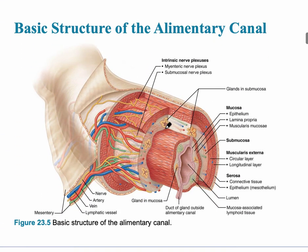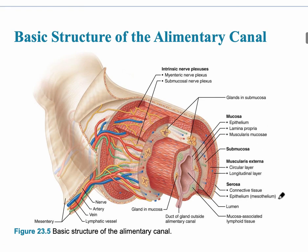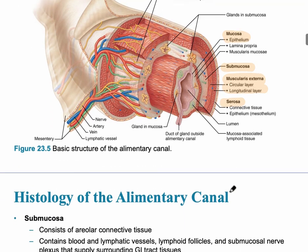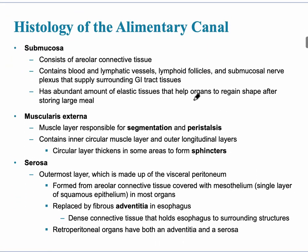A diagram shows the layers: the deepest is the mucosa with its epithelium, then the submucosa — which contains blood vessels, lymphatic vessels, lymphoid follicles, and glands. After that is the muscularis externa, which usually has two layers: the circular and longitudinal layers. However, in the stomach where there is extra mixing, there is an additional oblique layer. Finally, the outermost layer is the serosa.